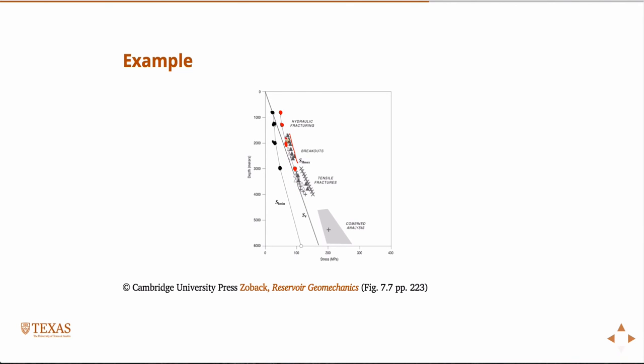In this case, they were bounded, so the solid triangles and the open triangles represent minimum and maximum bounds on SH max. These were done from inferences taken from SH min and the breakouts.